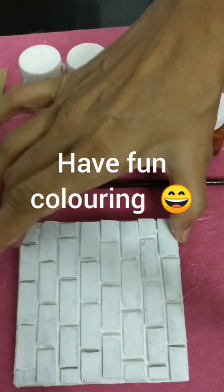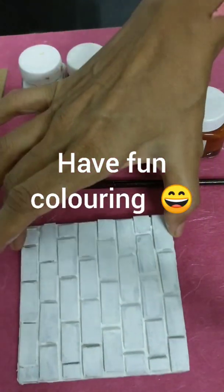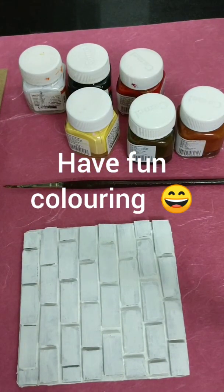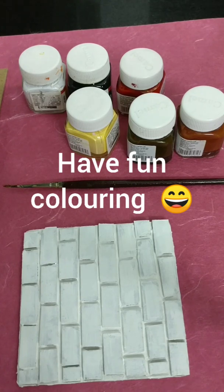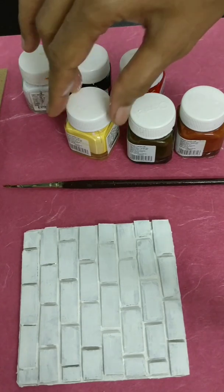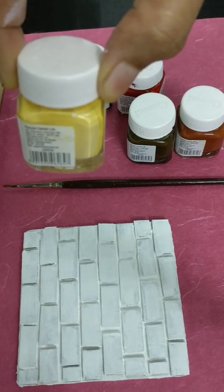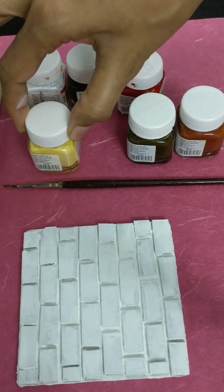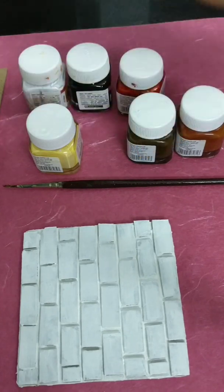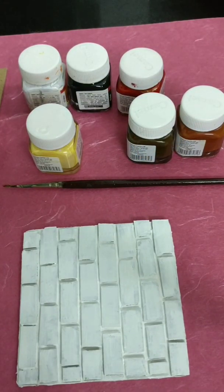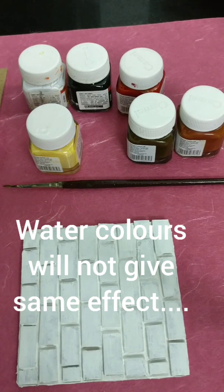The gesso has dried and now the fun part begins. Coloring of the bricks. So my colour palette is going to include a little bit of flesh tint or a yellow or an ochre colour, whatever you have. These are all acrylic colours but you can go ahead with chalk paints or you can use watercolours, whatever is convenient and whatever is available with you.